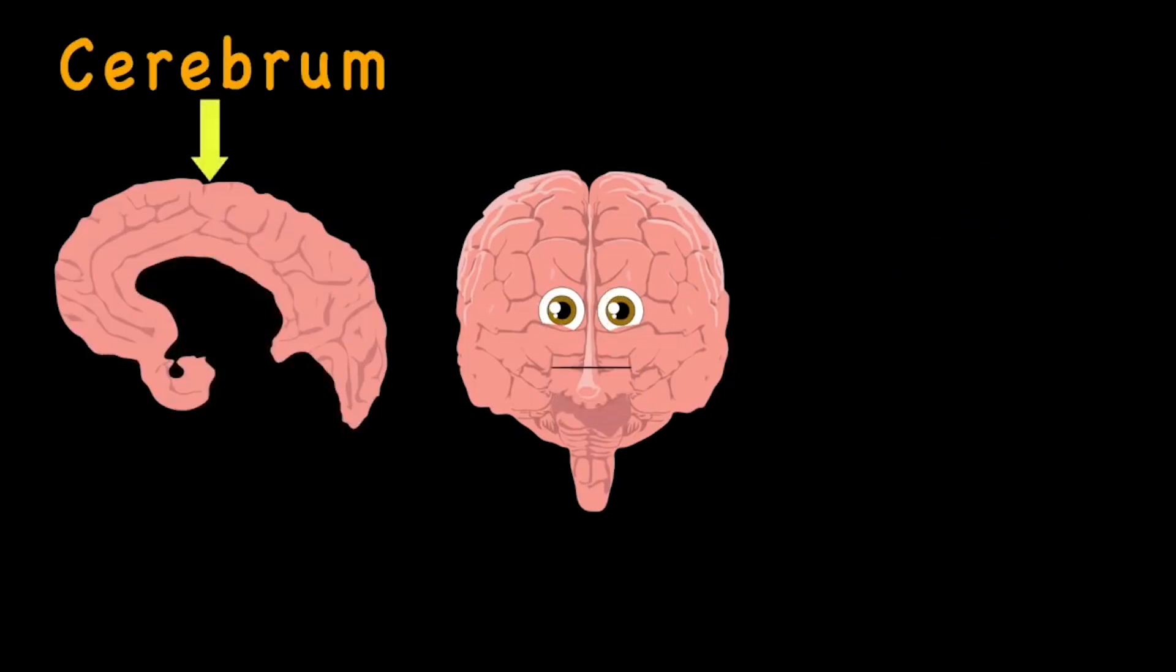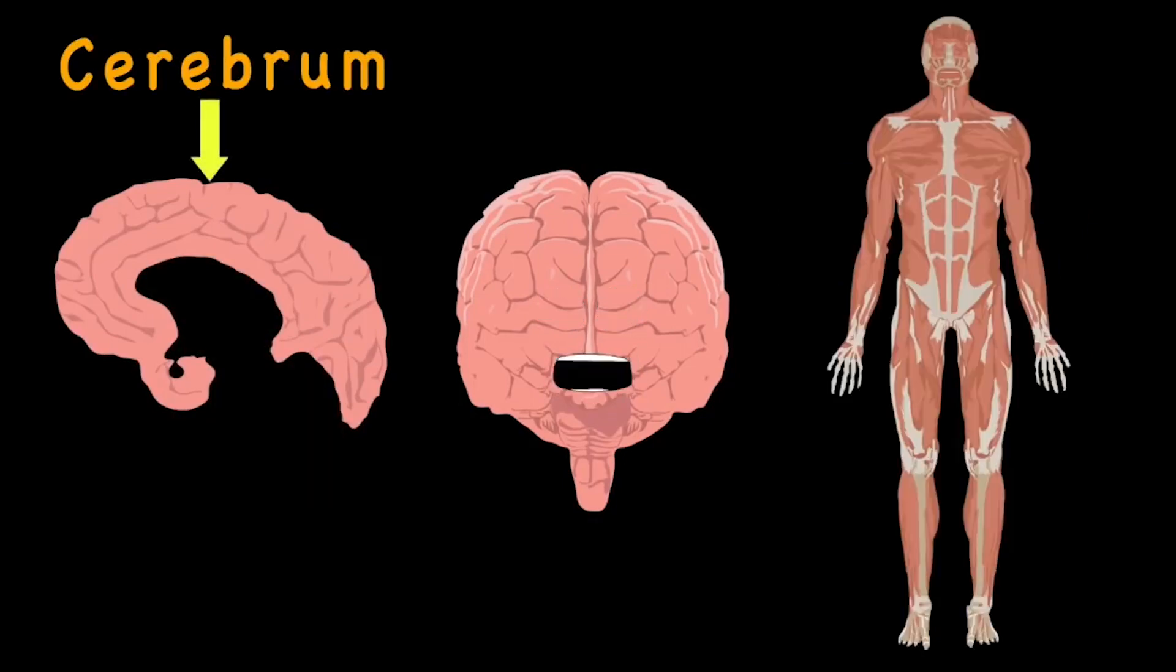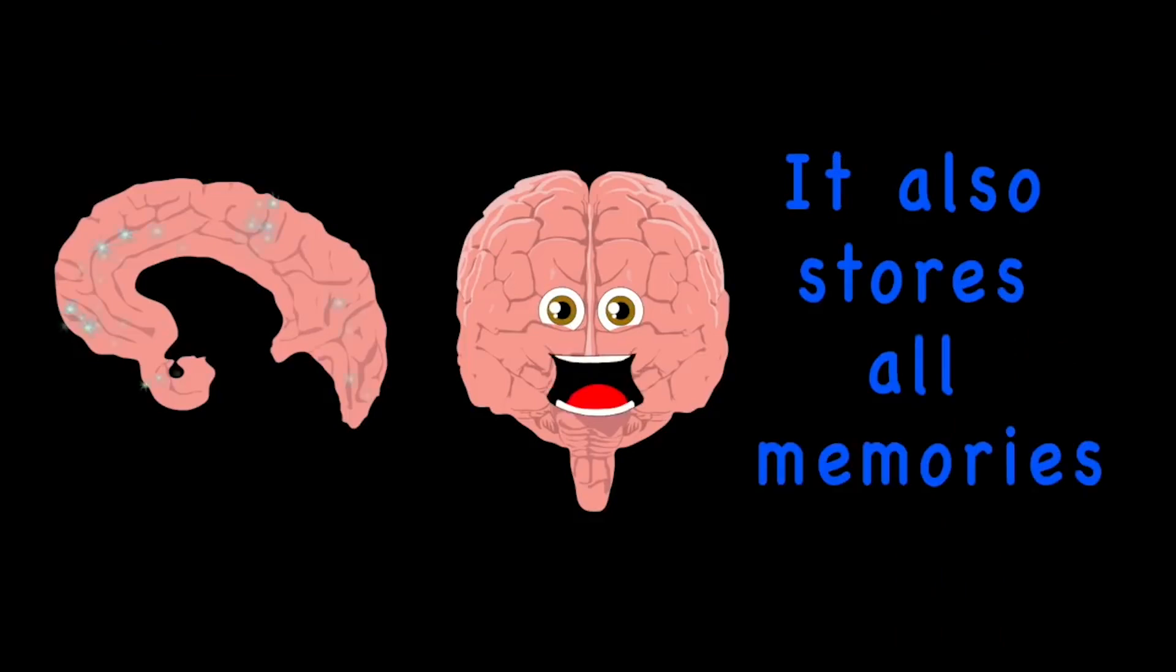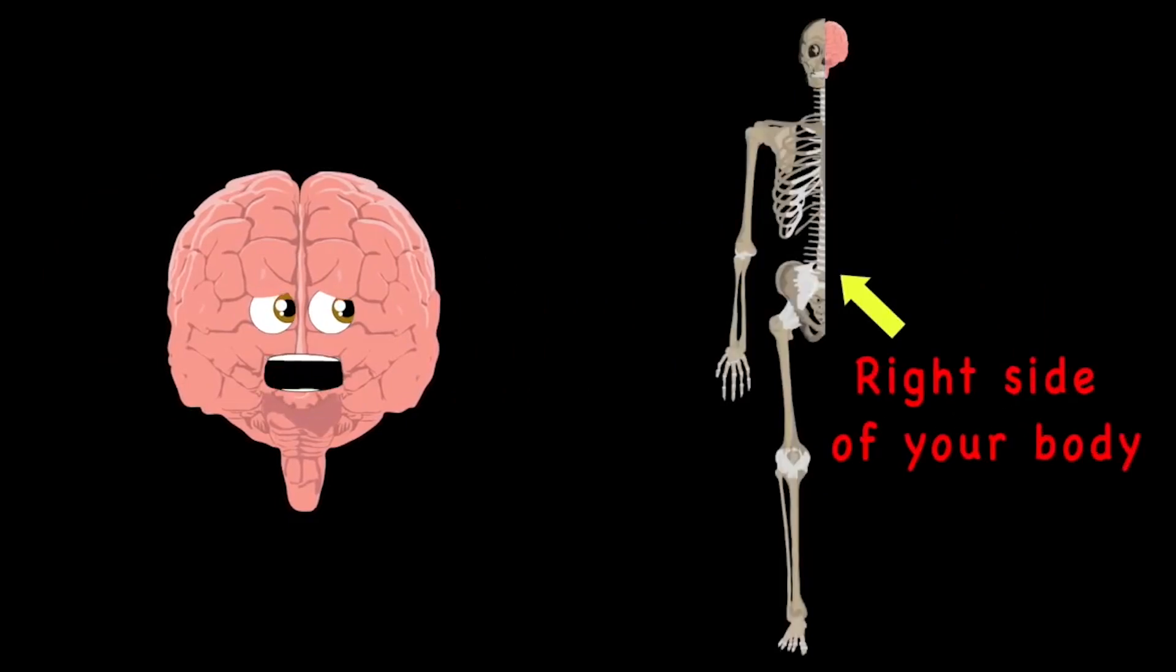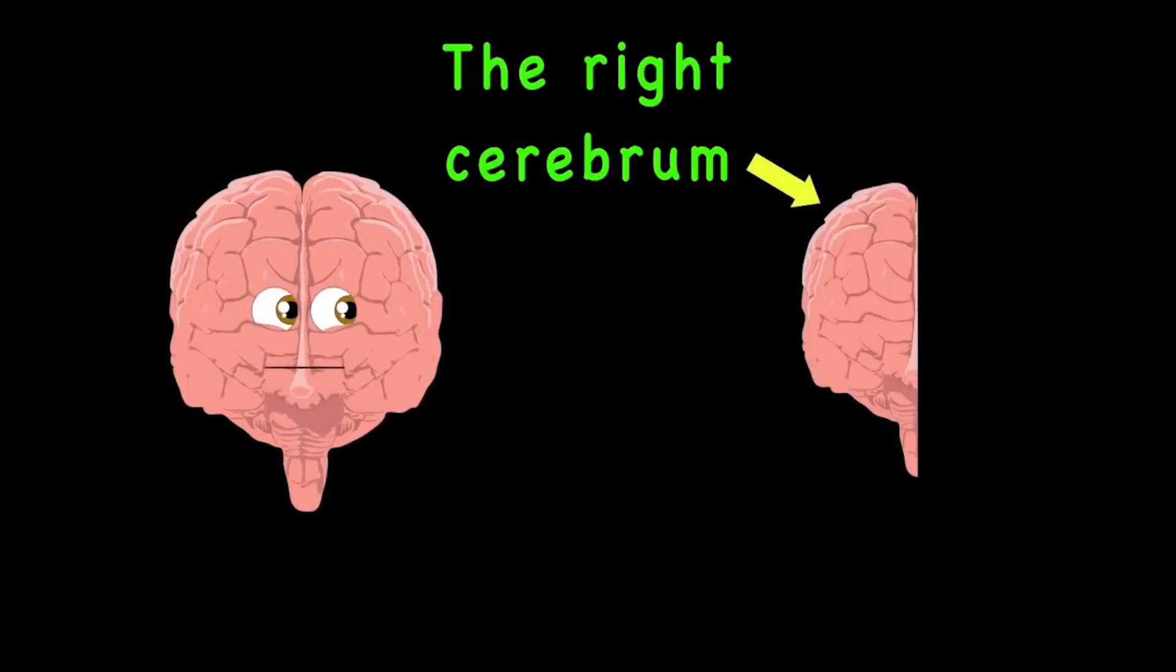The cerebrum controls your thinking and your muscles. It also stores all memories, without it you would struggle. The left cerebrum controls the right side of the body and the right cerebrum controls the left though it is tiny.